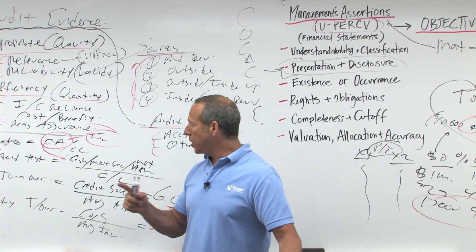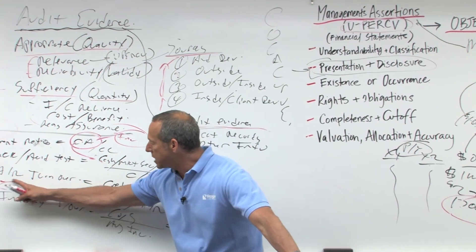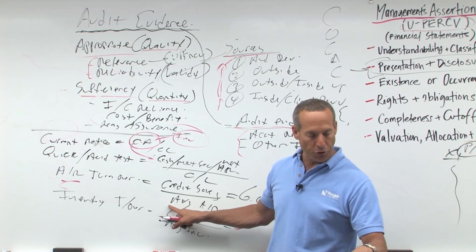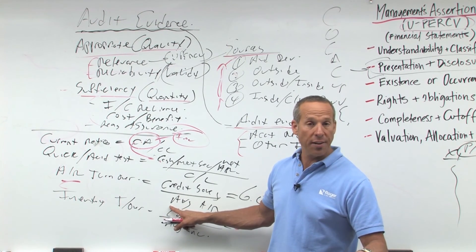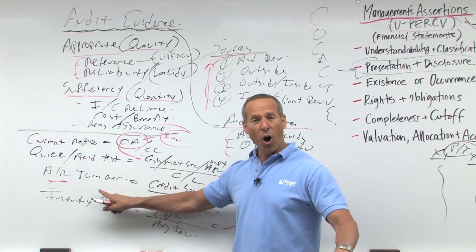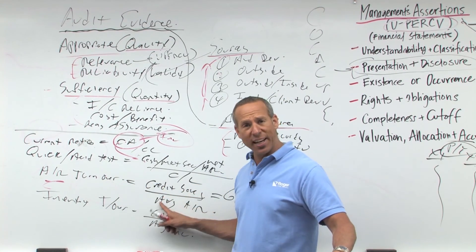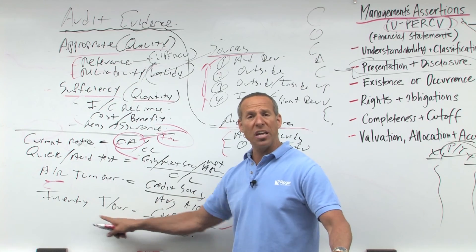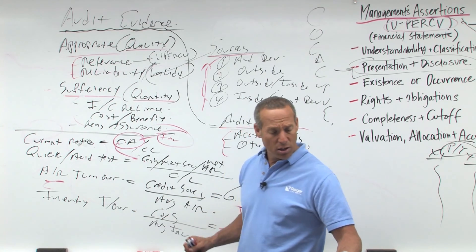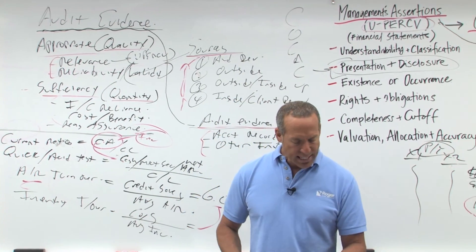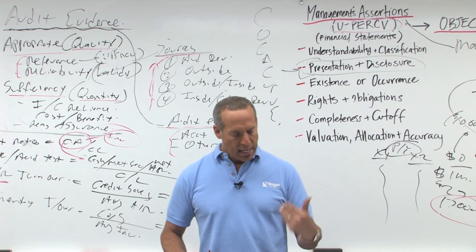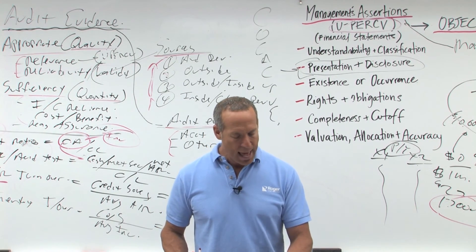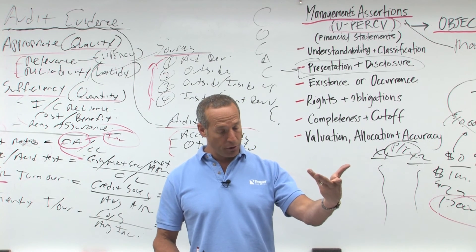Activity ratios — accounts receivable turnover measures liquidity of receivables, because it tells us: are these receivables liquid? Will they turn into cash? Inventory turnover measures whether inventory will turn into a sale, because it's not obsolete. Asset turnover — net sales over average total assets — measures how efficiently assets are used to generate sales.